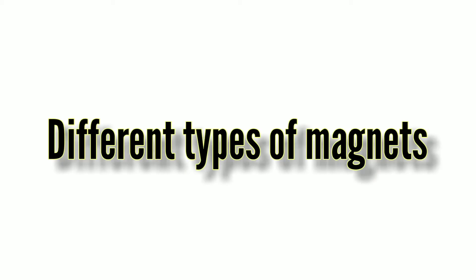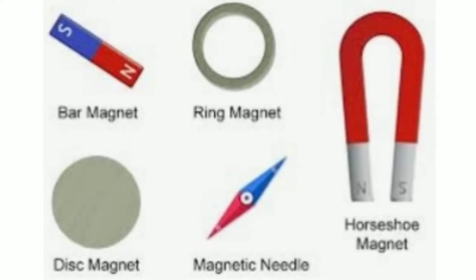Different types of magnets. There are different types of magnets. Bar magnets, ring magnets, disc magnets, magnetic needles, horseshoe magnets and u-magnets.